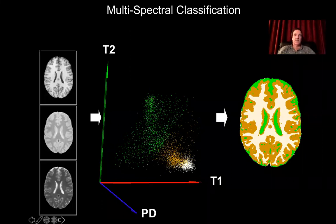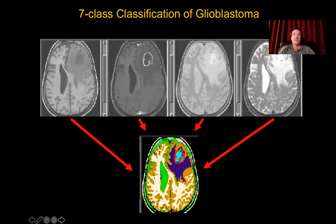Here is an example where we would take three T1, T2, and proton density MRI images and use some form of K-means clustering — a classification approach — to identify three tissue classes: gray, white, and CSF. You can extend this principle to any number of classes and any number of input images. Here you have four input images and seven classes showing a glioblastoma. But these were individual quantitative images.